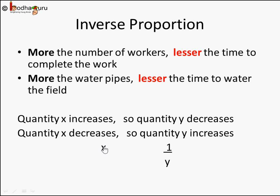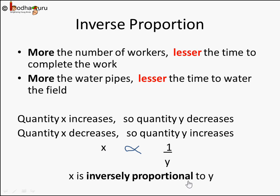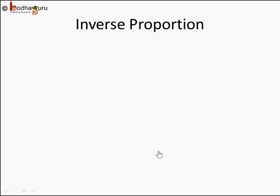In this case, we write it like: X is inversely proportional to Y. We use the same proportion sign, but instead of putting Y, we put 1 by Y. If Y decreases, the denominator decreases and the numerator increases. So X is inversely proportional to Y — the proportion sign remains the same, but we write X proportional to 1 by Y. Y decreases, X increases; Y increases, X decreases, or vice versa.